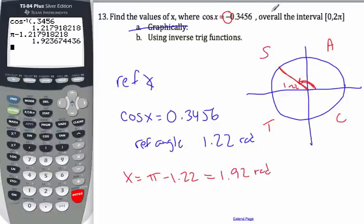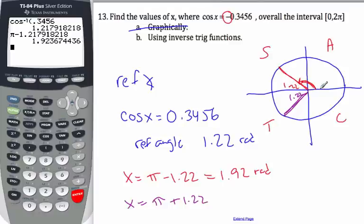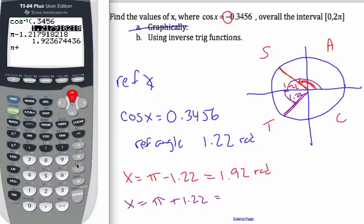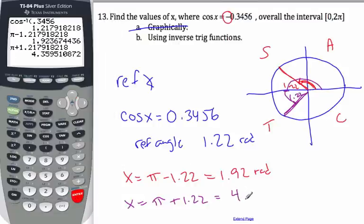The second angle I want to find — cosine is negative down here as well. And again, 1.22 is my reference angle. But this x is going to be not π minus, but rather π plus 1.22, because I'm going here and then a little bit further. If I go to my calculator and go second, π plus, and get that answer, I end up with 4.36 radians to three significant figures.